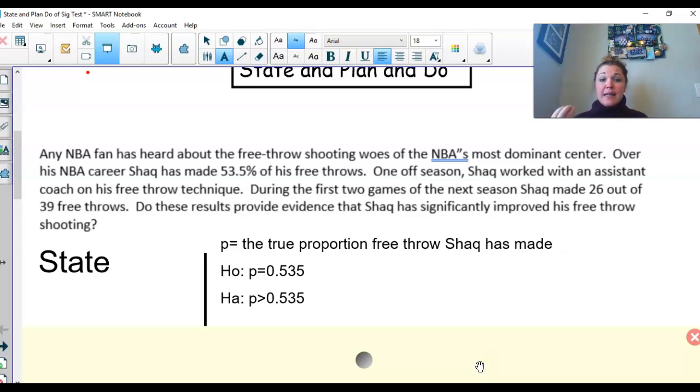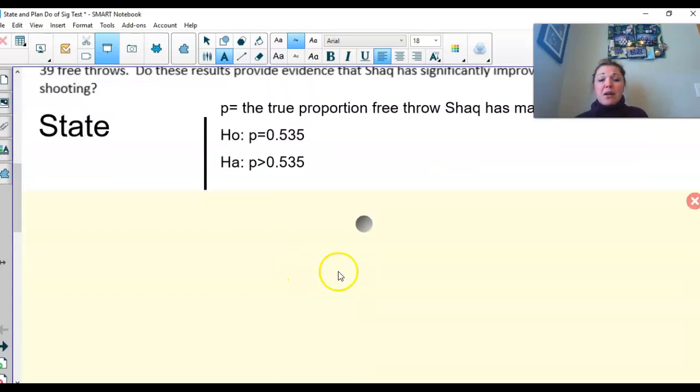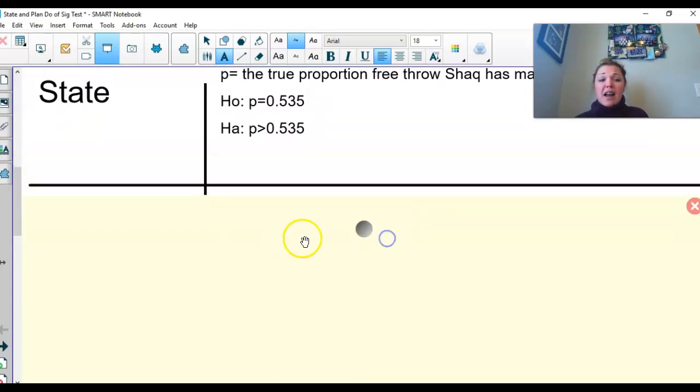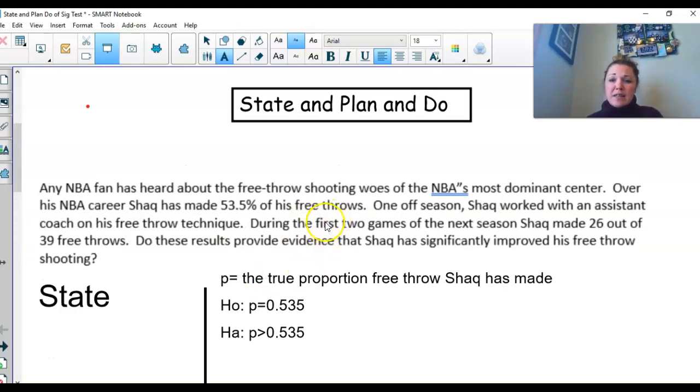We want to run the significance test. We want to see if, hey, 26 out of 39, is that better? Did he do a lot better or not? And if he did do better, is that statistic right there a significant statistic? So that's what we're doing right now. We're saying, did he do significantly better? Is he in this place where his true proportion is now better than 0.535? Well, in order to do that, we have to meet our conditions. So we're going to go with that R, that I, and that N. Is there anything random about this? And if we go through and we read through, I don't see anything where it says randomness. So we're going to assume randomness.